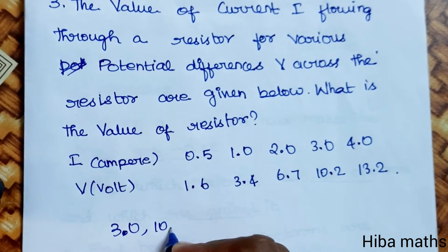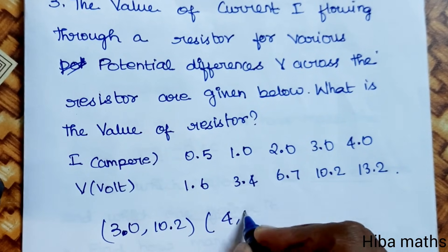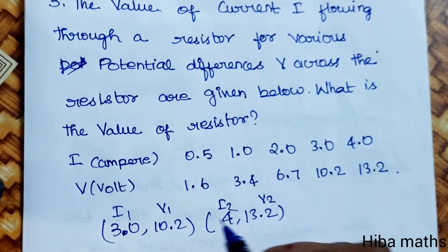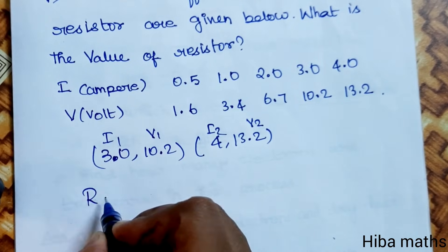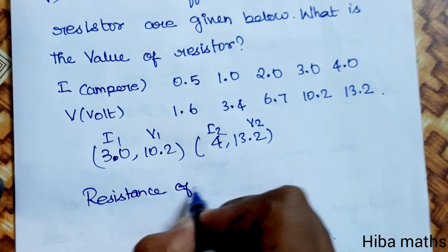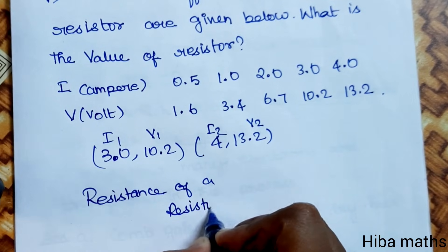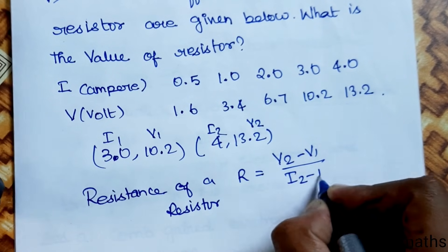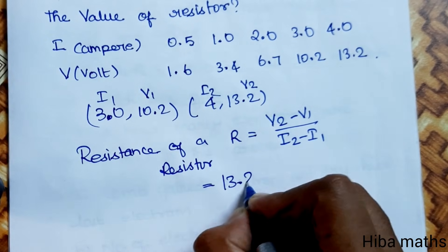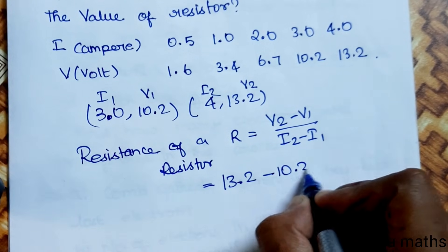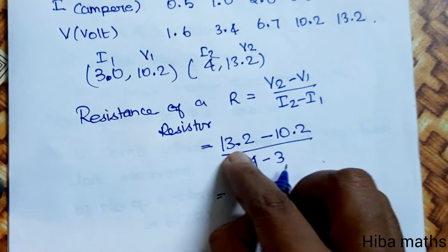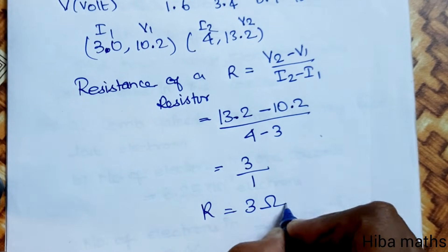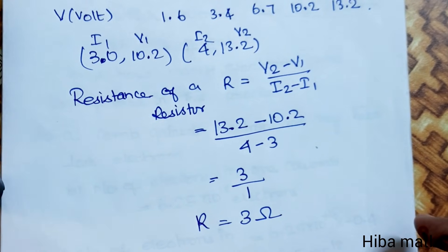Taking two points from the graph: V1 = 10.2, V2 = 13.2, I1 = 3.0, I2 = 4.0. Resistance R = (V2 − V1) / (I2 − I1) = (13.2 − 10.2) / (4 − 3) = 3 / 1 = 3 ohms. If you have a doubt, ask in the comment section. Thank you for watching.